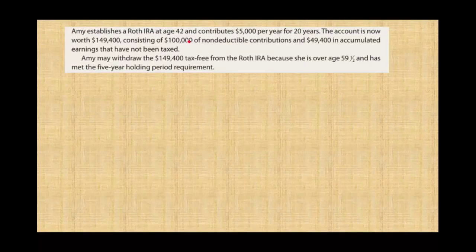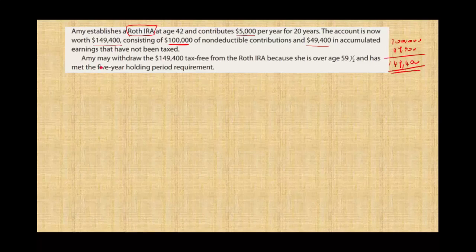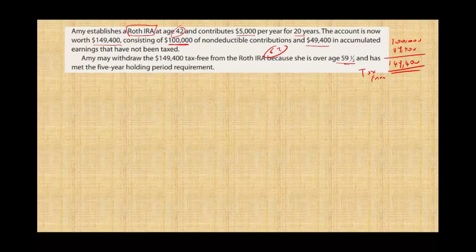Let's work an example. Amy establishes a Roth IRA at age 42 and contributed $5,000 per year for 20 years. The account is now worth $149,400 — consisting of $100,000 of non-deductible contributions and $49,400 in accumulated earnings. Since this is a Roth IRA, the amount she contributed is already taxable. Amy may withdraw the $149,400 tax-free because she is over age 59 and a half — she started at 42 and contributed for 20 years, so she's 62. Pay the taxes now, and you get it tax-free later.